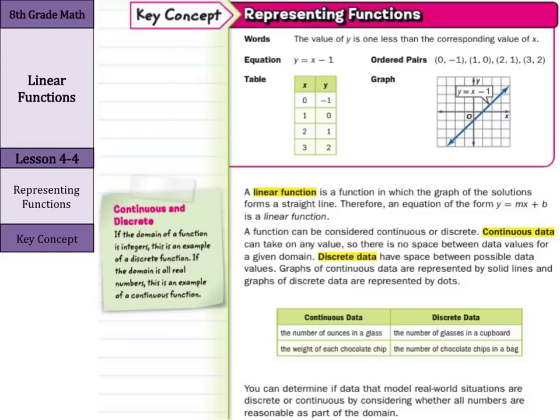When you think about it, if there's no space between the data values, anywhere on that line can be a data value, versus discrete data just by the dots, because there's no data in between the dots. It's just the dots.